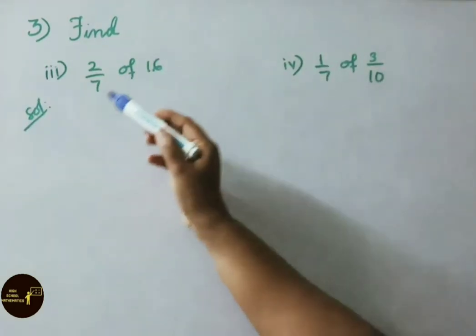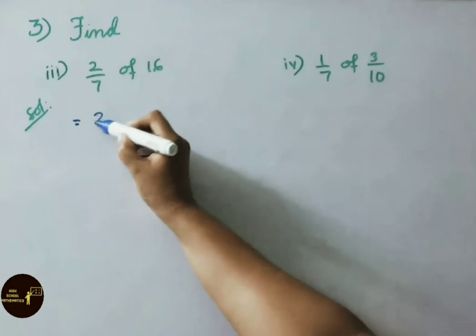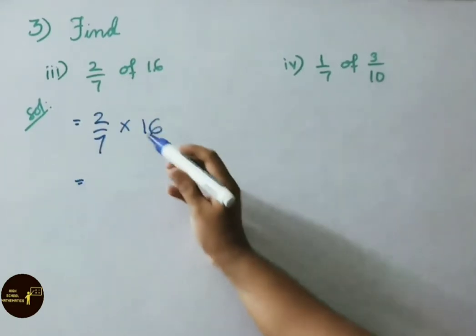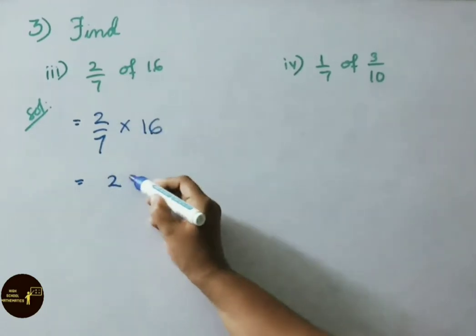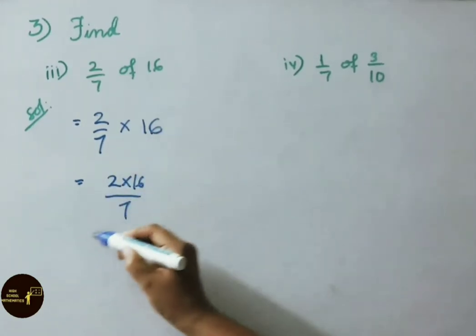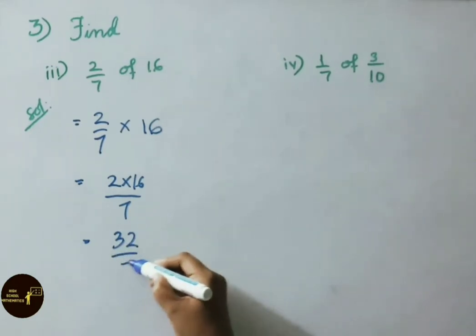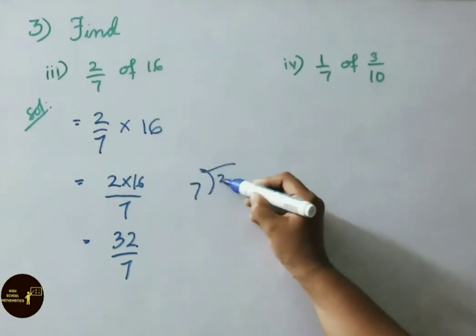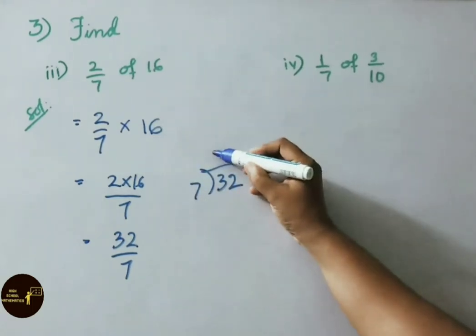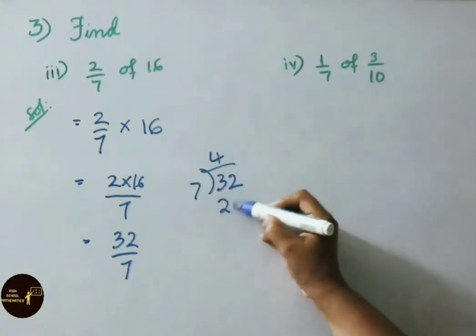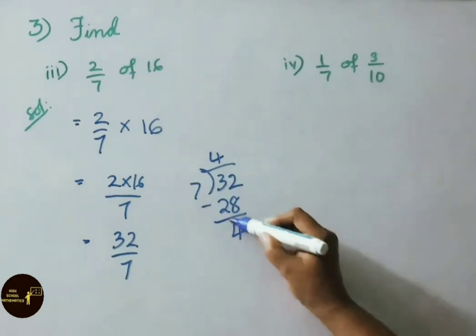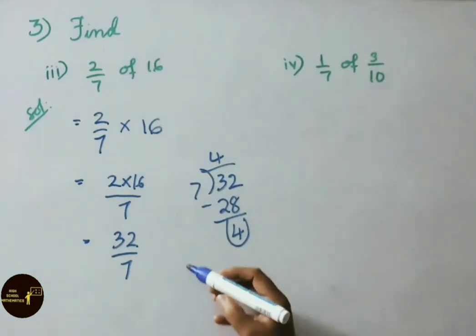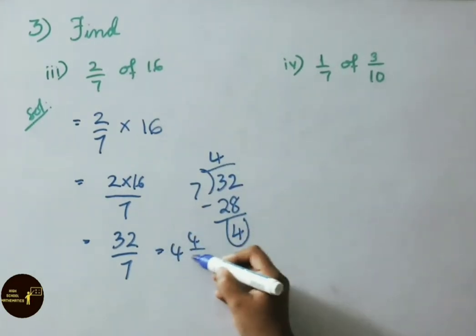The third sum: 2 by 7 of 16. Write 2 by 7 into 16. Multiply the numerators: 2 into 16 by 7, that is 32 by 7. Simplifying by division: 7 fours are 28, 32 minus 28 gives a remainder of 4. So the answer is 4 and 4 by 7.